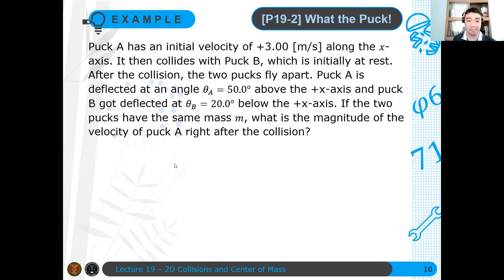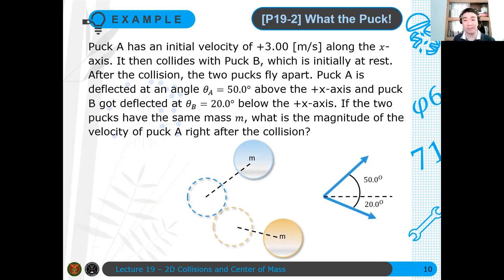So you have two pucks. Puck A is initially at rest - puck B is moving with velocity 3 meters per second. Then it collides with puck B initially at rest and the two pucks fly apart. Puck A is now 50 degrees with respect to the horizontal and puck B is now minus 20 degrees with respect to the horizontal. The question now is what are the final velocities of the two pucks after the collision? But we're specifically determining the velocity of puck A after the collision.